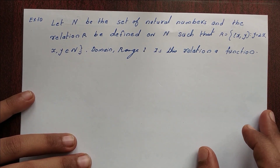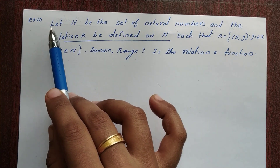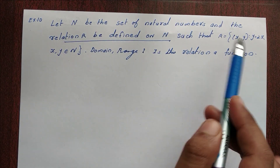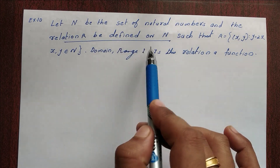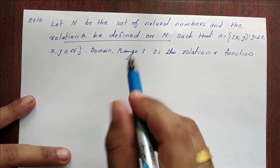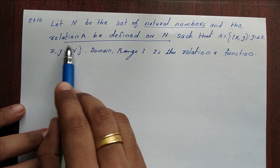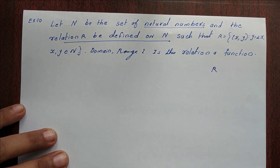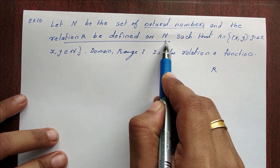Let's do a problem. Example 10: Let N be the set of natural numbers, and the relation R be defined on N. Natural numbers are 1, 2, 3, and so on.